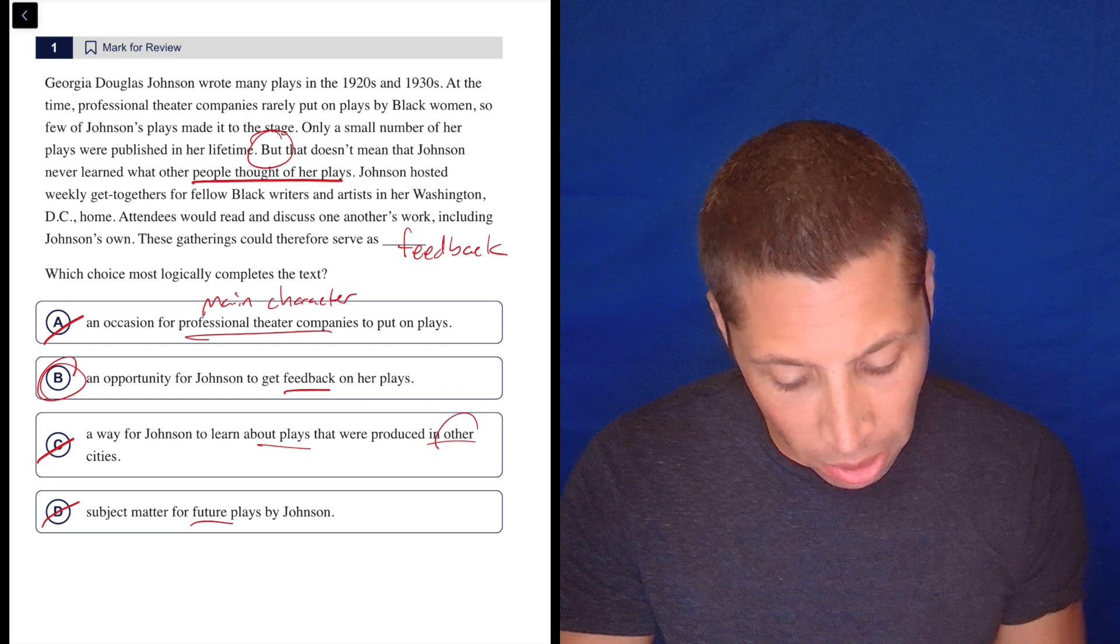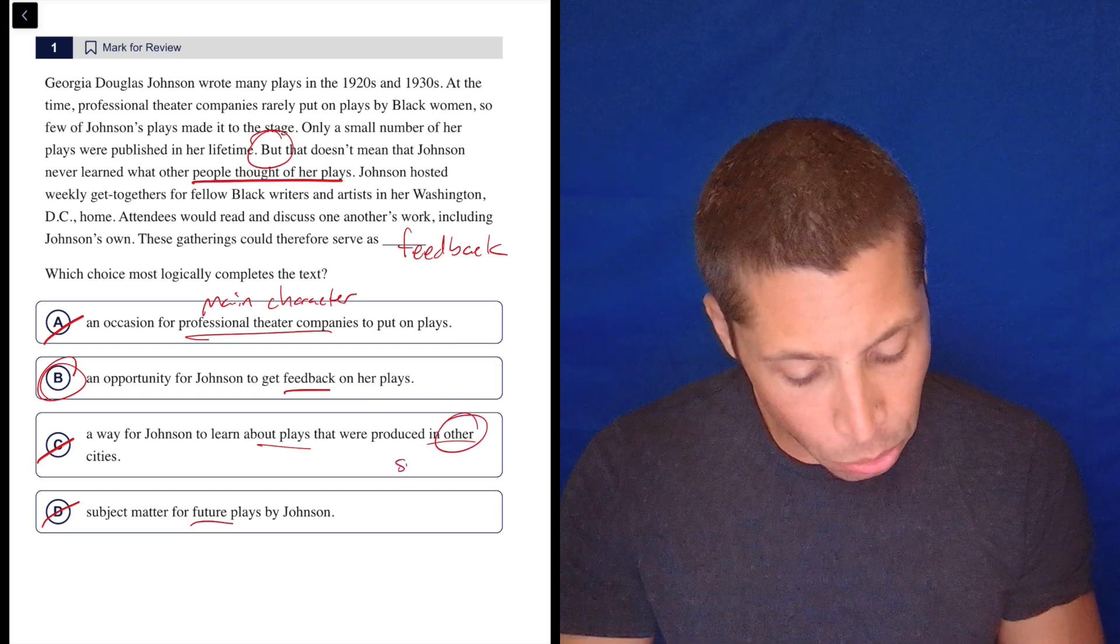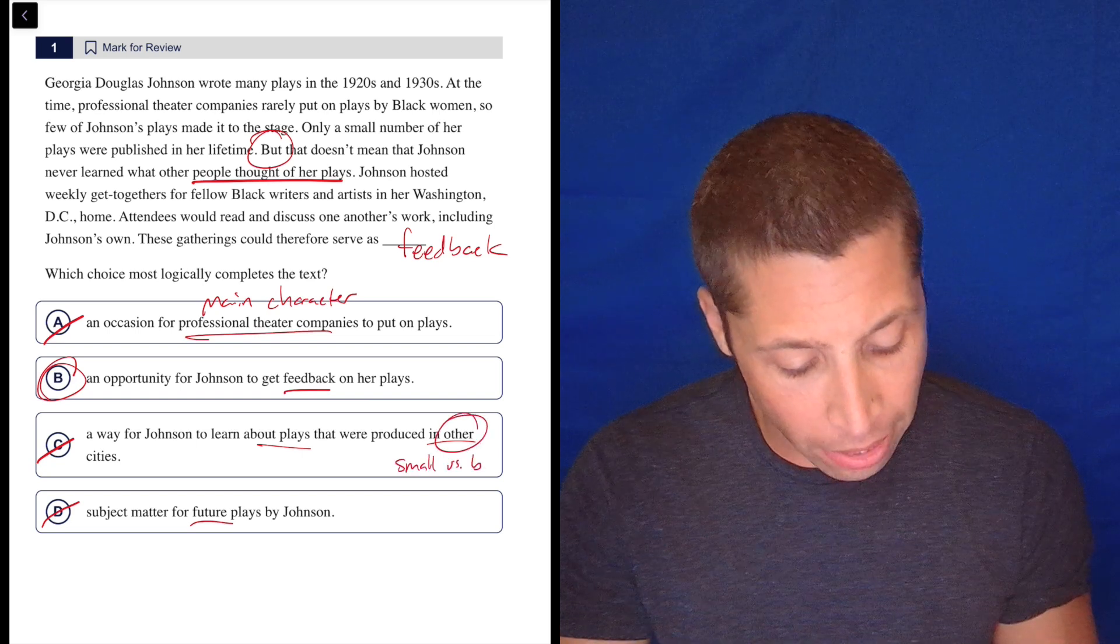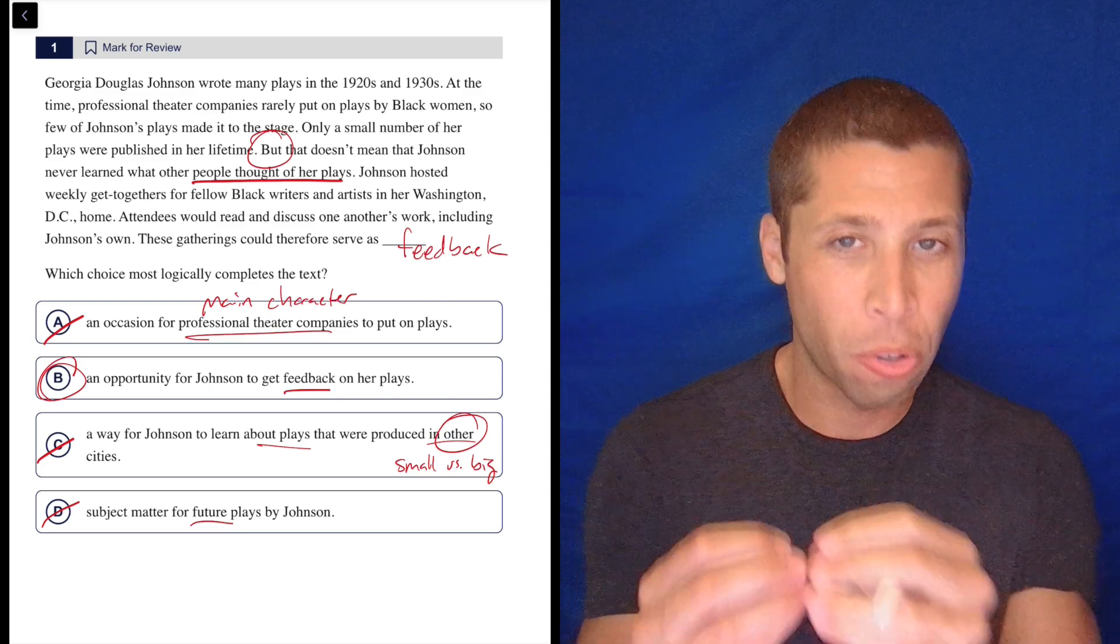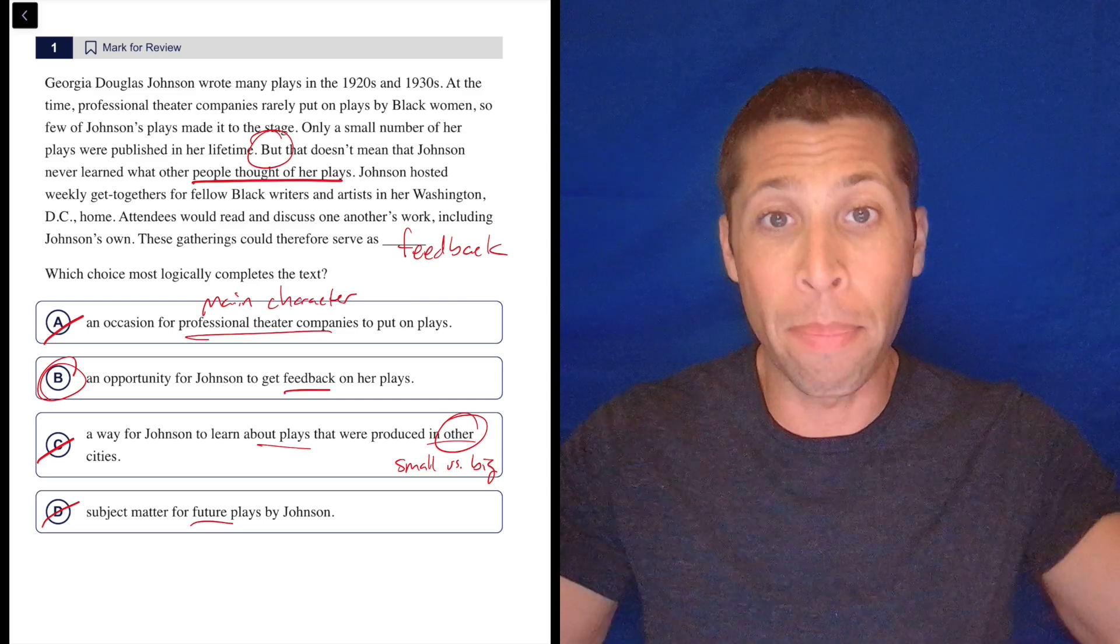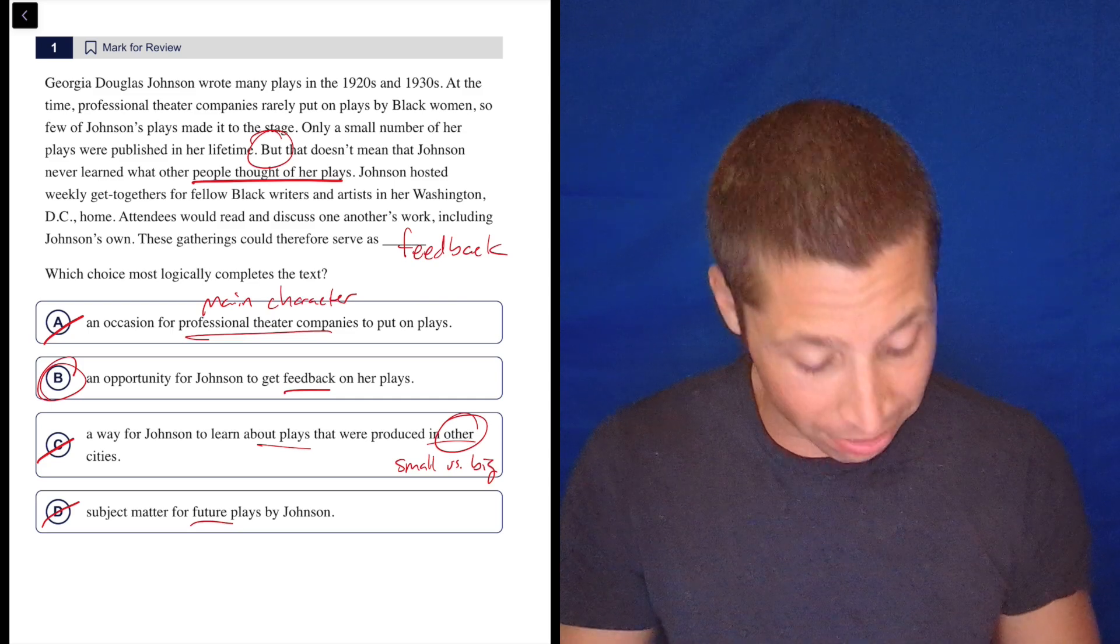C, a way for Johnson to learn about plays that were produced in other cities. The word 'other' usually is kind of a small versus big issue, right? We're talking about this one place and why are we making a bigger claim about all other places. It doesn't make any sense.